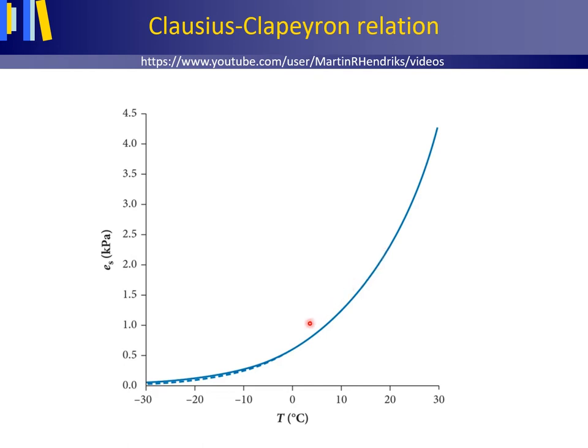The graph depicts that warm air has a much greater capacity to hold moisture than cold air, and this may be important when thinking about the impact of global warming on precipitation. The solid curve is for water and the broken curve is for ice. Ice has a slightly lower saturation vapor pressure than water.